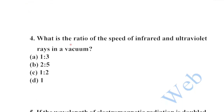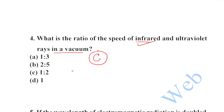Next: what is the ratio of the speed of infrared and ultraviolet rays in vacuum? We know electromagnetic waves in vacuum travel with the speed of light c. Both infrared and ultraviolet travel with speed of light, so the ratio will be 1. Option D is your correct option.